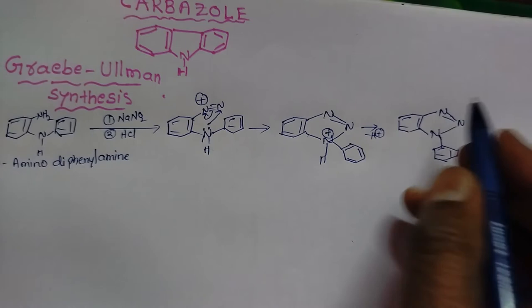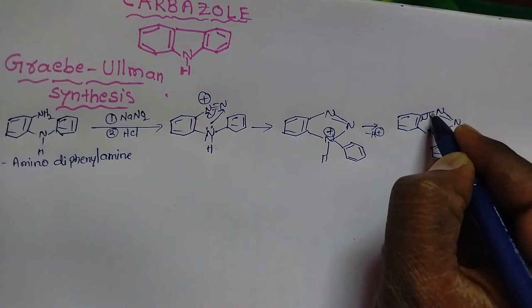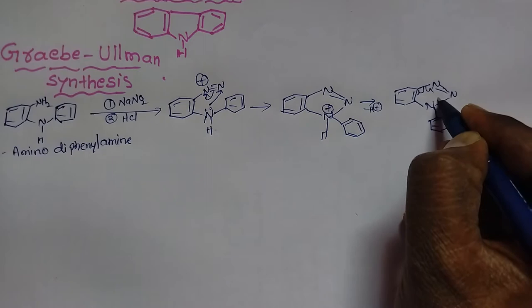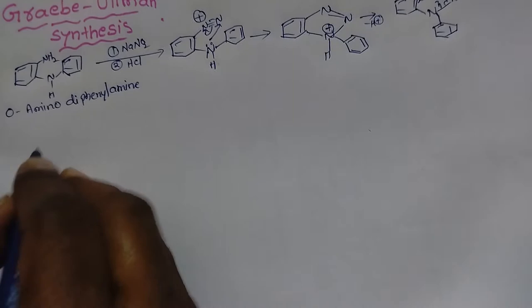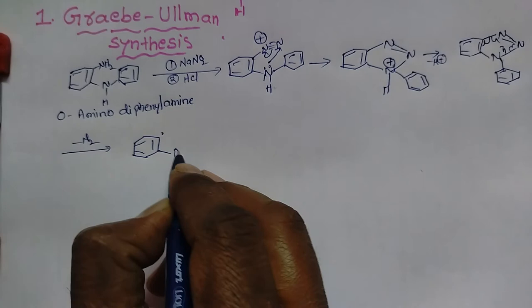In this triazole, homolytic cleavage takes place. We get free radicals and nitrogen goes out. Due to homolytic cleavage, one electron comes here, one electron goes here, and similarly another homolytic cleavage takes place. Another electron shifts, nitrogen goes outside, and we get biradicals.